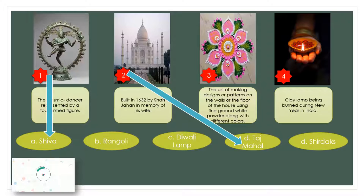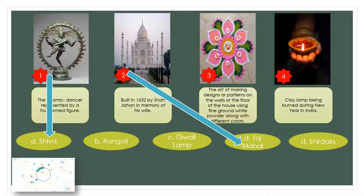We have number three. The art of making designs or patterns on the walls or the floor of the house using fine ground white powder along with different colors. Timer starts now. The correct answer is letter B, Rangoli.